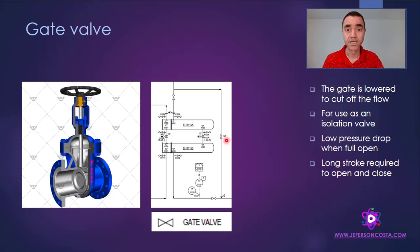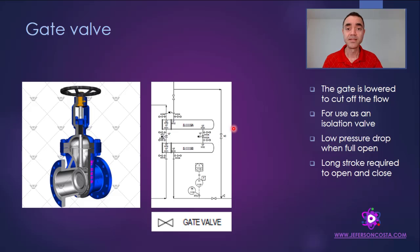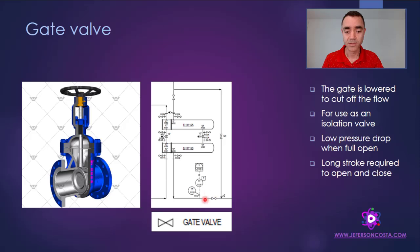NC on a pipe and instrumentation diagram means normally closed. So in normal operation, the upstream valve will be fully open, the downstream valve will be fully open, and the bypass valve will be closed. If maintenance is needed on the heat exchangers, I can open the bypass and close the upstream and downstream valves to isolate the system.